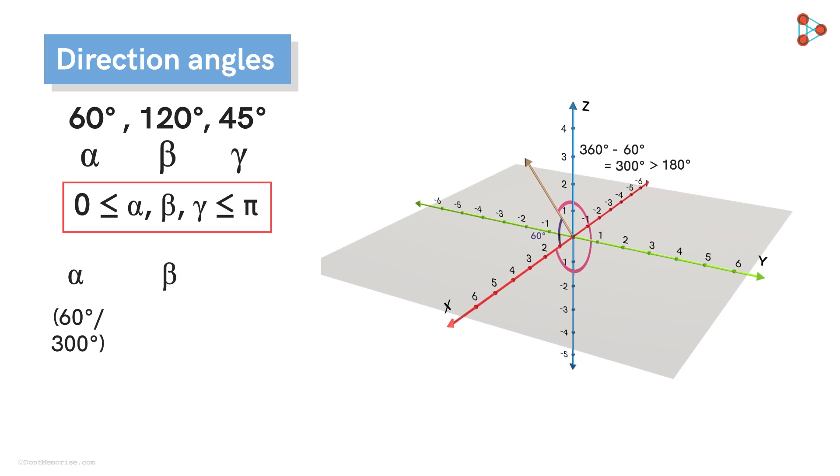Similarly, beta and gamma can be either of these two angles in which one of the two possible angles is a reflex.